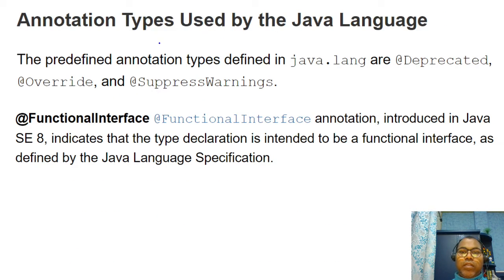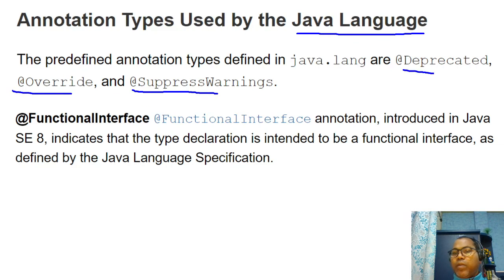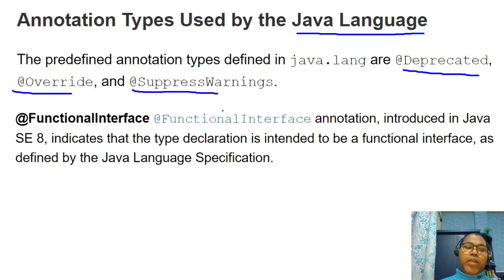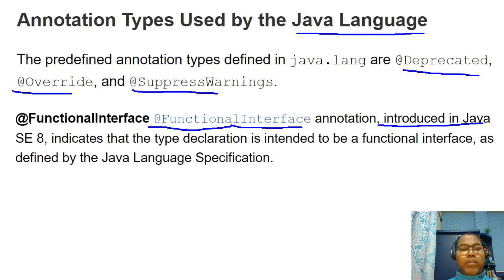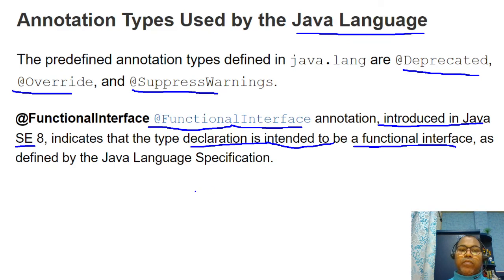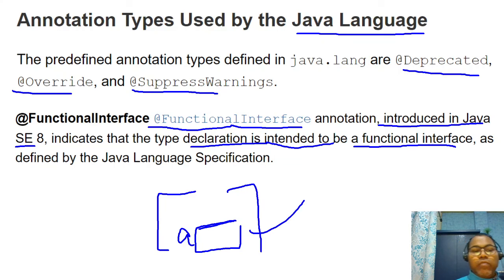There are some predefined annotations provided by the Java language in `java.lang`. These include `@Override`, `@SuppressWarnings`, and `@Deprecated` for deprecating a method. From Java 8 onward, a new annotation `@FunctionalInterface` was introduced. This annotation indicates that an interface is a functional interface — meaning it defines only one single abstract method.